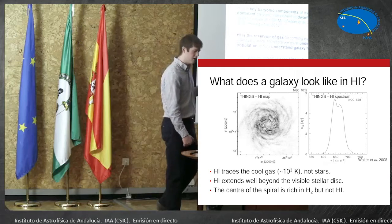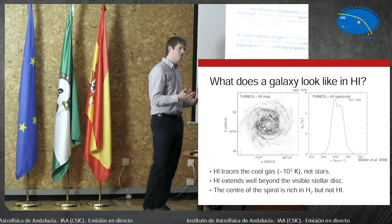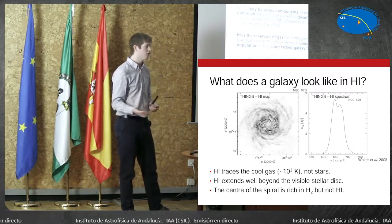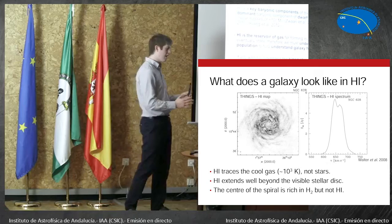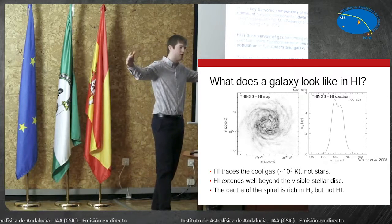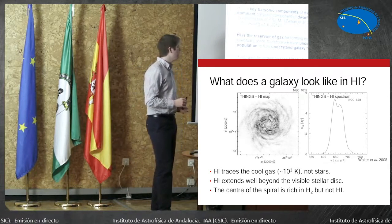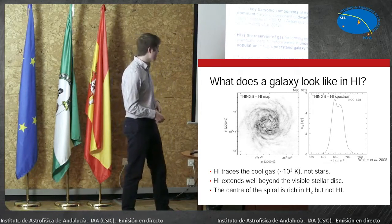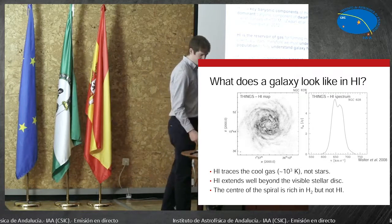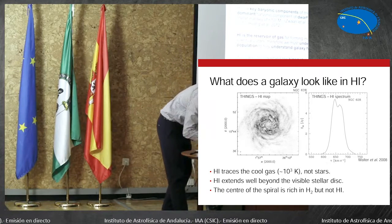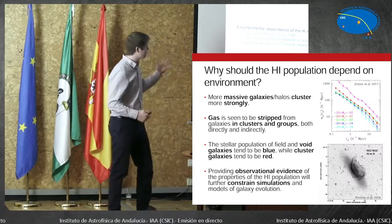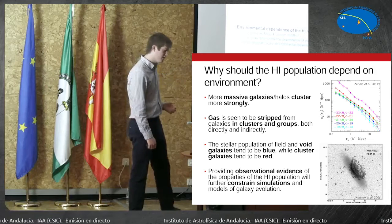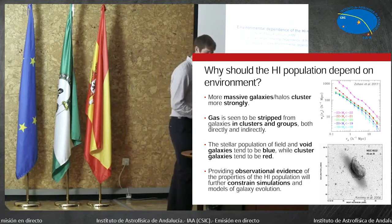A final point is that if you're interested in the kinematics of the galaxy — like rotation curves, because that tells you about the halo where most of the mass is — the distribution of H1 extends much further out into the halo than the stars do. So H1 is a much better source of information about the dark matter halo. That was my introduction. Now I'm going to move on to telling you about what an H1 mass function is and how it does or doesn't vary with environment.